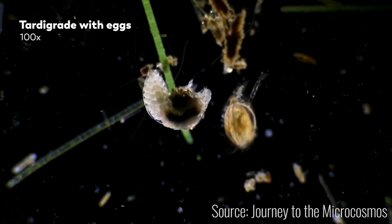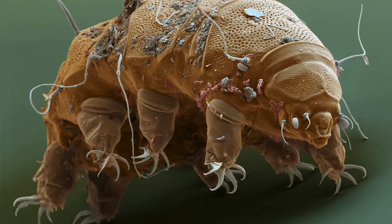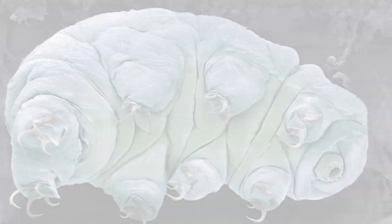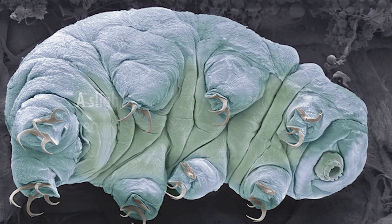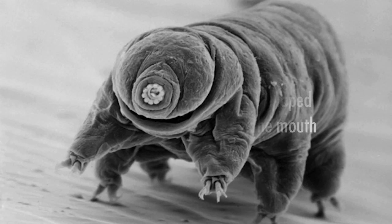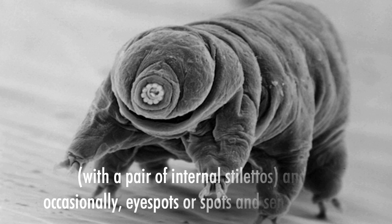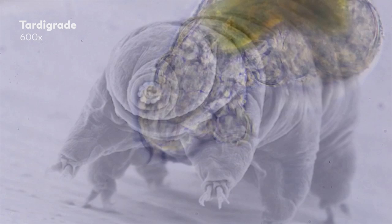As for the general structure of a tardigrade, observation has allowed us to know that their bodies consist of five undifferentiated segments. A slightly differentiated, blunt-shaped head segment that contains the mouth with a pair of internal stilettos, and occasionally eye spots or spots and sensory cirrus. The remaining four segments each have a pair of ventralateral legs terminated with claws between four and eight.